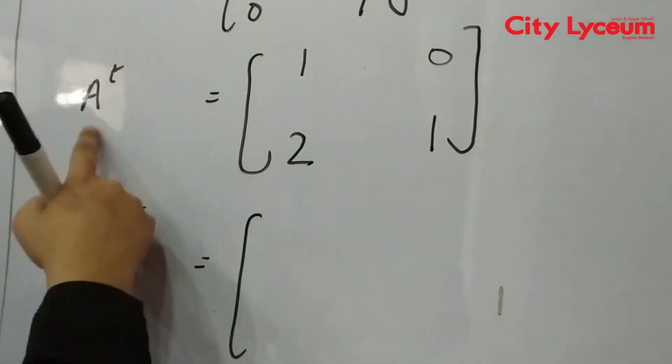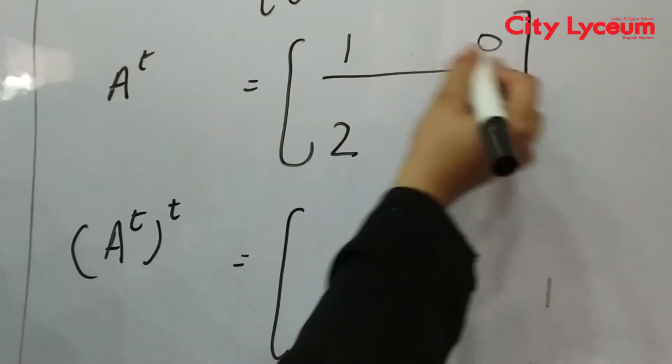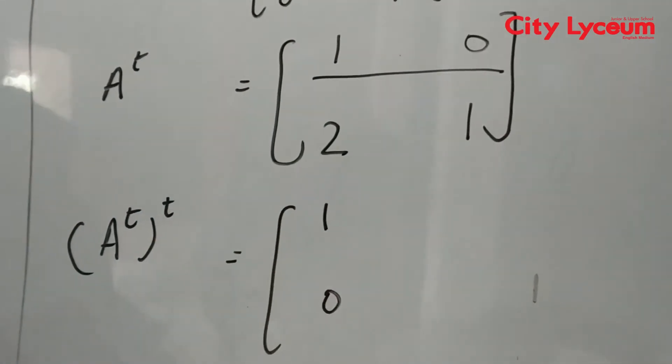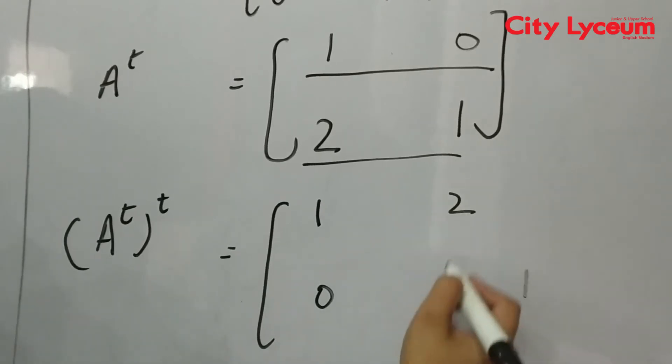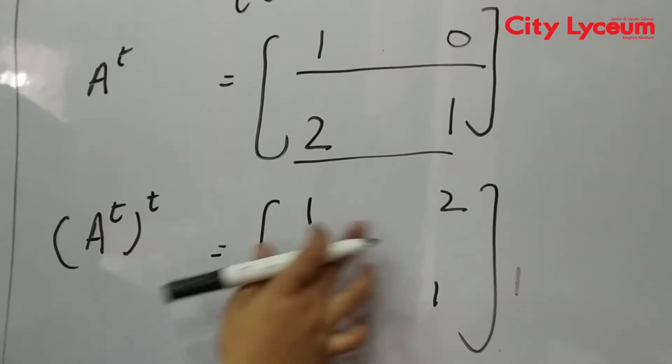Now we have A transpose [1 0; 2 1], we will convert it again. Horizontally we will write vertically. 1, 0 is vertical, 2, 1 is vertical. So this is A transpose transpose = [1 2; 0 1].